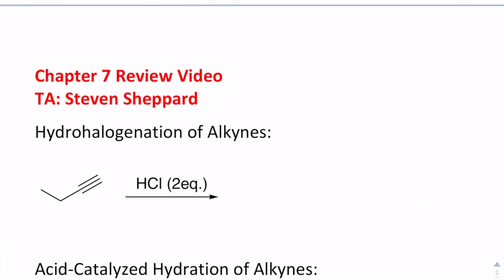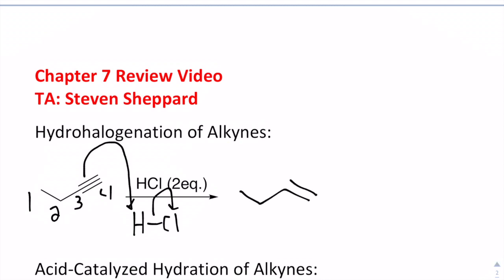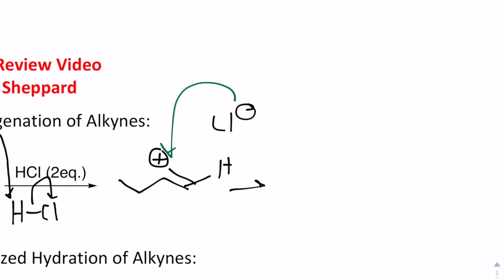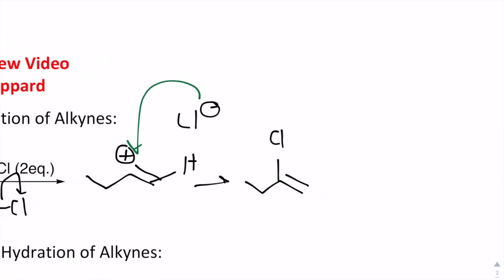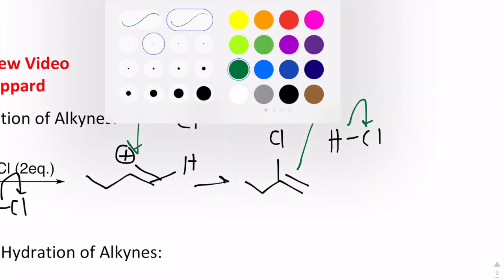The next reaction is hydrohalogenation of alkynes, which goes through a carbocation intermediate just like with alkenes. One of the pi bonds acts as a nucleophile to grab the proton from HCl, generating the chloride anion, and placing the proton on the less substituted position. This generates a carbocation on the more substituted carbon following Markovnikov's rule. That chloride comes in and attacks the carbocation, giving the vinyl chloride product from the first equivalent.